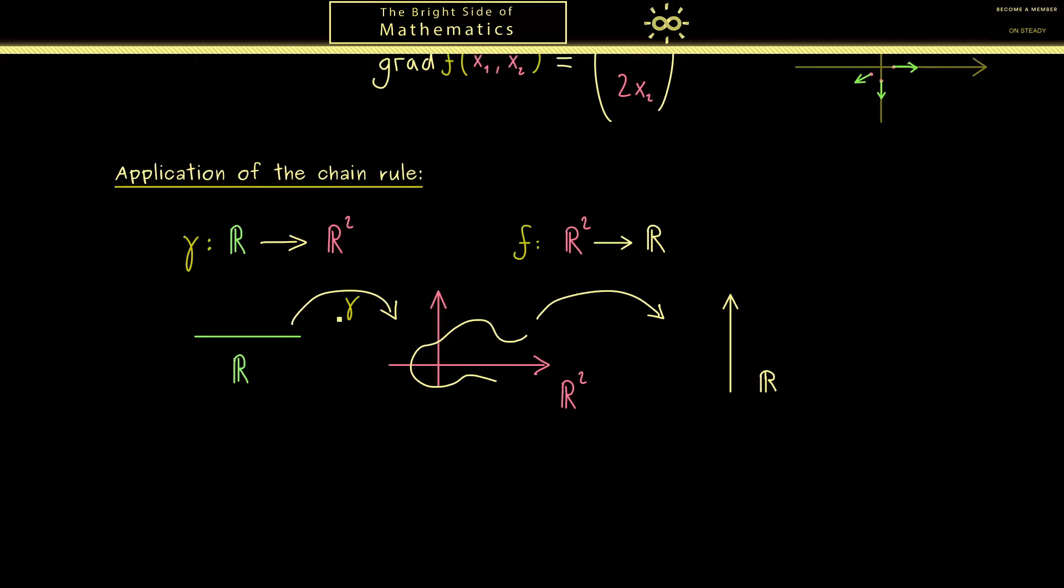Hence by using our function f from above and a suitable curve γ we can check how the chain rule works in calculations. Indeed for γ I want to choose a map that describes a circle in the plane. Moreover I will use t for the variable of this map. And now for example a circle can be described by using cos and sin.